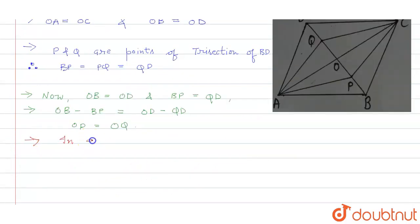Then, in quadrilateral APCQ, we have that OA is equals to OC and OP is equals to OQ. So if the diagonals of quadrilateral APCQ bisect each other, then APCQ is a parallelogram.